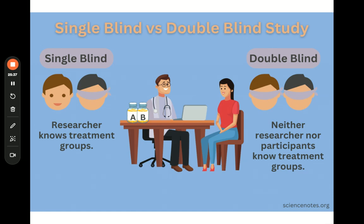Single-blind is when the researcher knows who's getting the independent variable and who's getting the placebo. Double-blind is when the researcher doesn't know either. Think of Grey's Anatomy where the researcher doesn't know who's getting the cancer treatment and who's getting a saline bag. The researcher has to not know — otherwise it's both an ethical violation and a procedural violation.